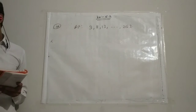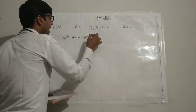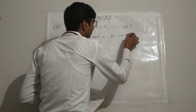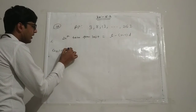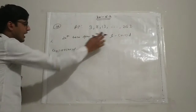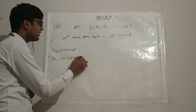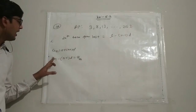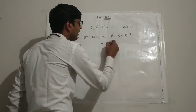The AP is 3, 8, 13, ..., 253, and we need to find the 20th term from the last. The formula for the nth term from the last is L minus (n minus 1) times d, where L is the last term. Here the last term L is 253.